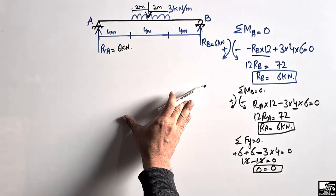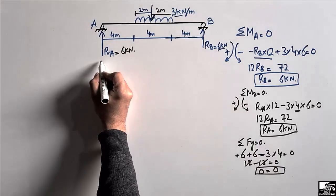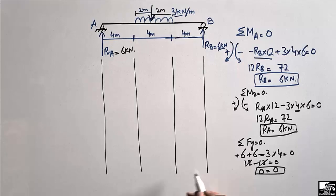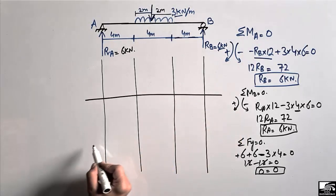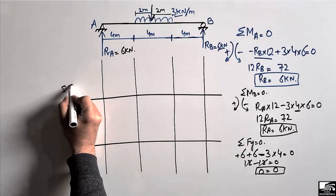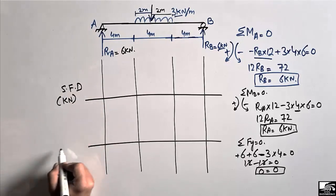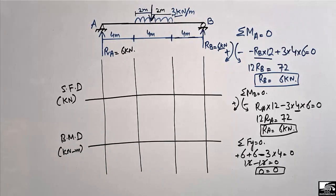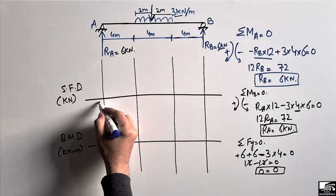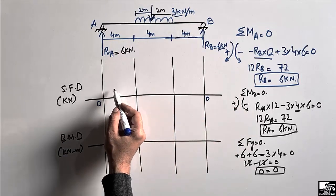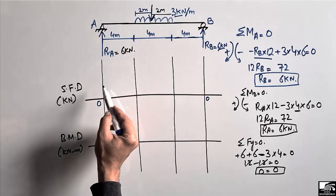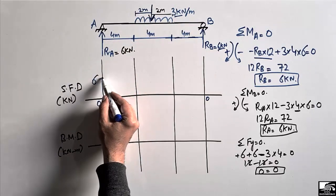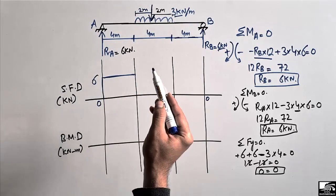Now we draw the shear force and bending moment diagram. We establish horizontal reference lines — the shear force diagram uses units of kilonewtons, and the bending moment diagram uses kilonewton-meters. Starting the shear force diagram from support A: values above the reference line are positive, below are negative. The reaction RA = 6 kN acts upward, so we jump up to +6. There is no load for the first 4 meters, so the shear force remains a straight horizontal line at +6 kN.